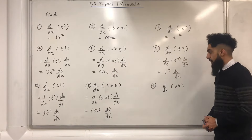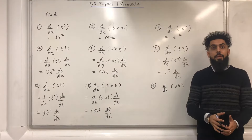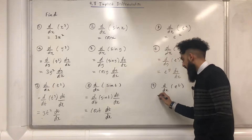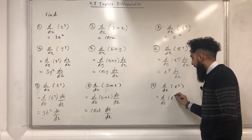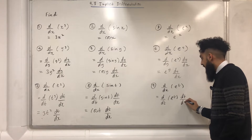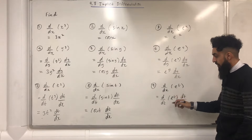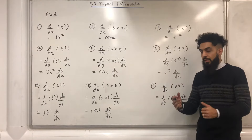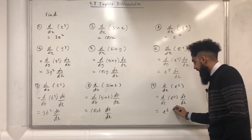Question number nine: differentiate e to the power t with respect to x. I can use the chain rule and write d over dt of e to the power t, multiplied by dt over dx. Differentiating e to the power t with respect to t gives e to the power t, and then dt over dx.